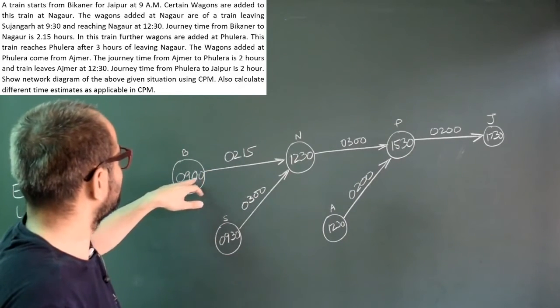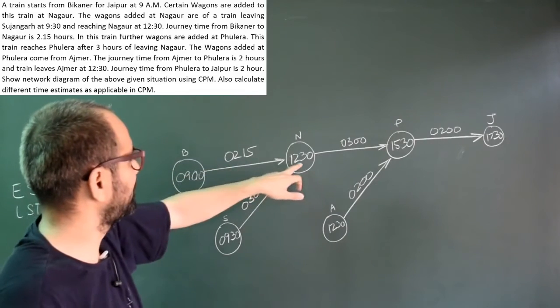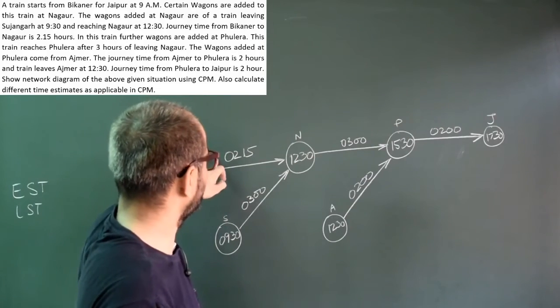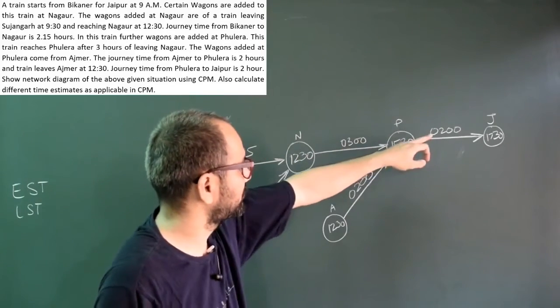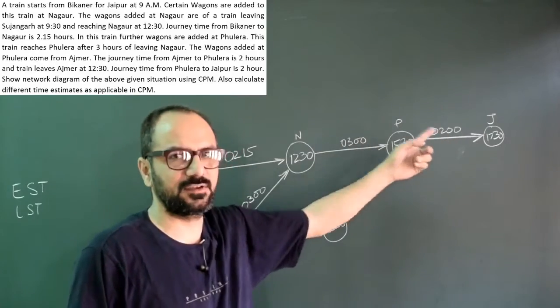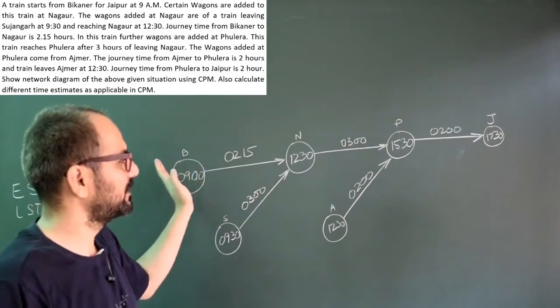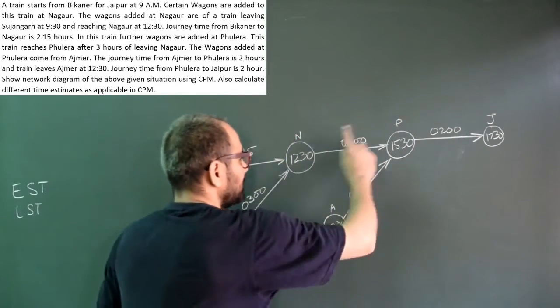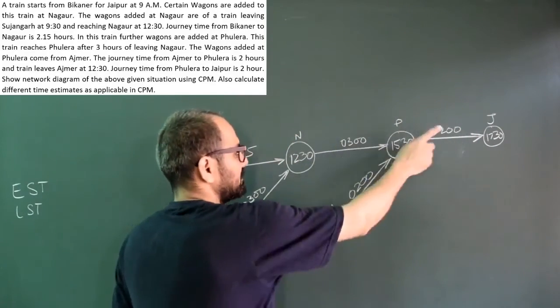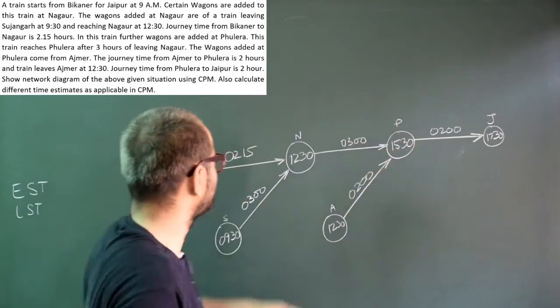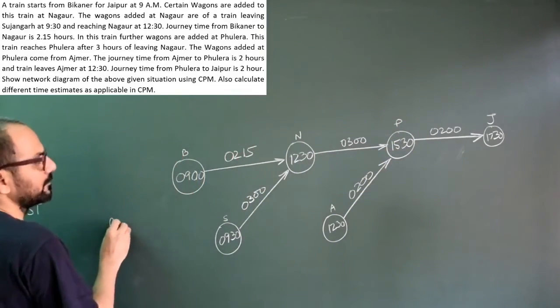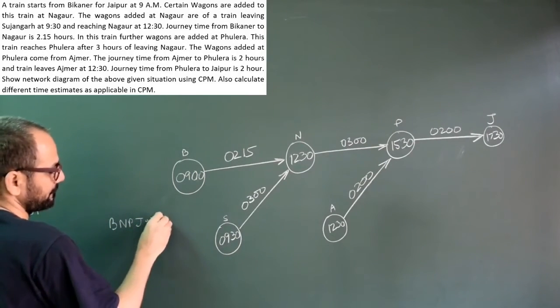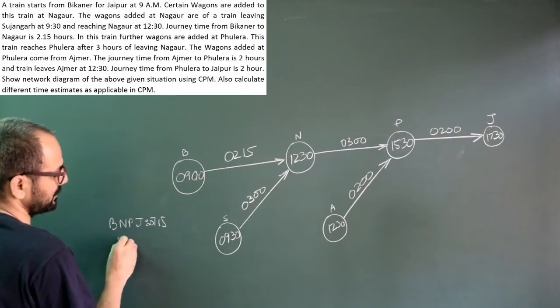This journey starts at 9, 2 hours and 15 minutes, 12:30, 3 hours to Phulera at 15:30, and 2 more hours to Jaipur at 17:30. That's 7 hours and 15 minutes total.